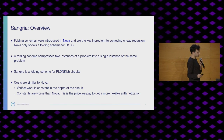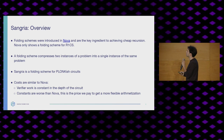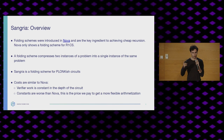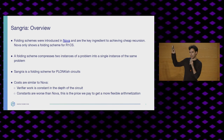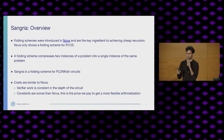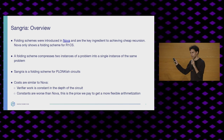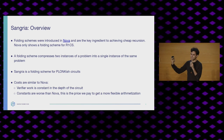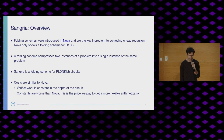The costs of doing that are similar to the costs you'd have in Nova. The verifier's work is constant with however many rows you have in your circuit. However, the constants are slightly worse than Nova, and we'll see why in a second. You can think of this as a price you pay for the added flexibility of Plonk circuits.